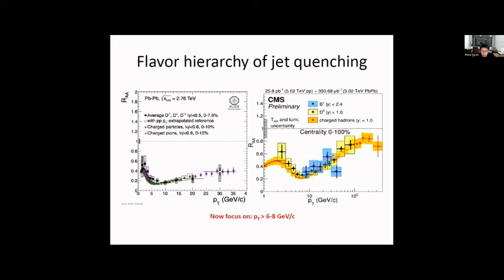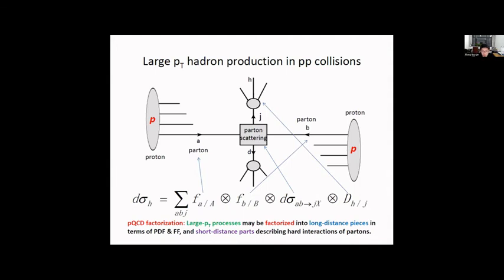We want to understand why the energy loss has a very clear flavor dependence, but for the hadron R_AA, D mesons, B mesons, and charged hadrons have similar R_AA. Focusing on the high-pT part, where we can do a reliable calculation, for high-pT hadron production we use the collinear QCD factorization theorem. The large-pT process can be factorized into the long-distance part—convoluting parton distribution functions and fragmentation functions—and the short-distance parton scattering cross section.